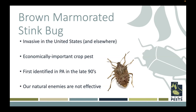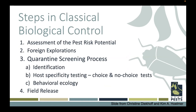In this biological control process, we have to assess the risk of the pest, go over to Asia where this insect is native, find natural enemies, bring them back to quarantine, identify what these natural enemies are, make sure they are safe to release — this host specificity testing I'll bring up pictures of in a minute — then we need to know how it behaves, what its ecology is, what its biology is. After that we can release them pending a petition process.